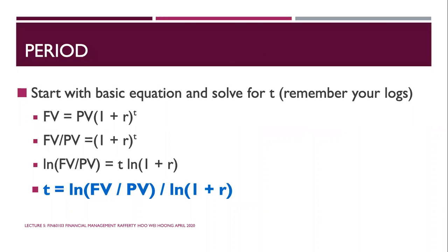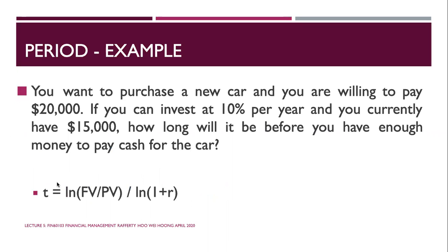Finding the number of periods: to solve for t is slightly more complex — you need to use natural logarithms. The formula becomes: t = ln(FV / PV) / ln(1 + r). Memorize this formula. Example: you want to buy a car for $20,000. You have $15,000 now and can invest at 10% per year. PV = $15,000, FV = $20,000, r = 10%. How long before you have enough? Use the ln formula.